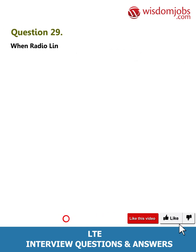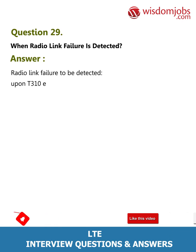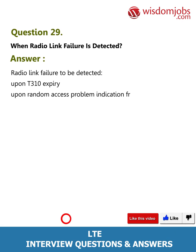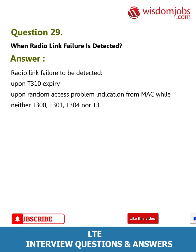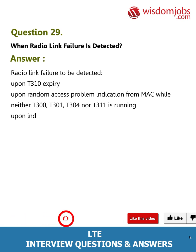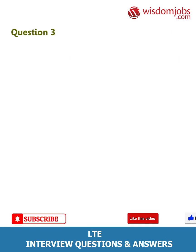Question 29: When is radio link failure detected? Answer: Radio link failure is detected upon T310 expiry; upon random access problem indication from MAC while neither T300, T301, T304, nor T311 is running; or upon indication from RLC that the maximum number of retransmissions has been reached.